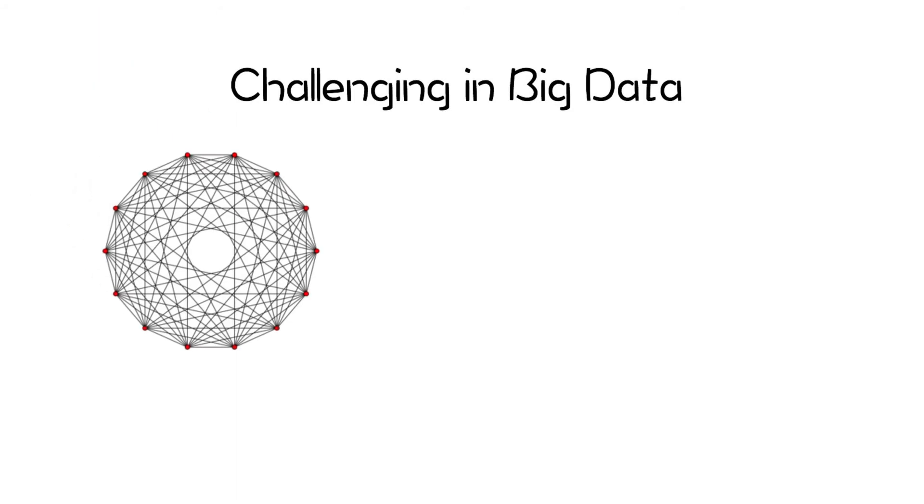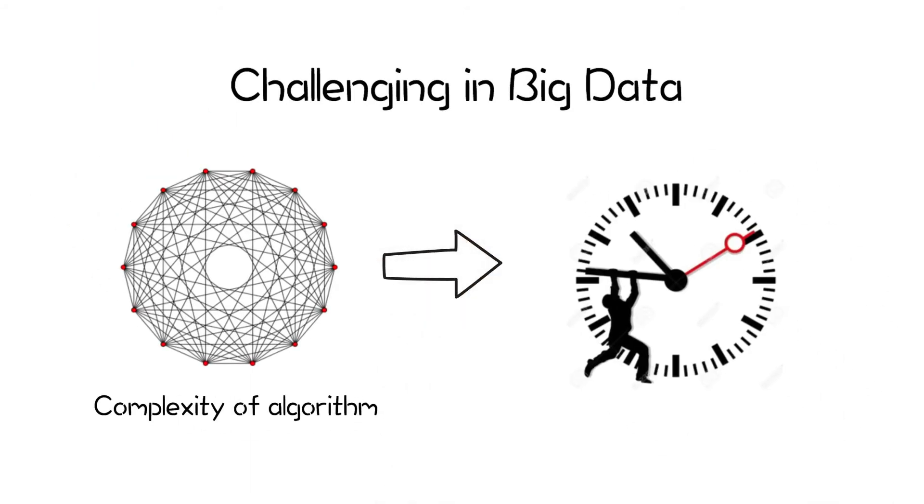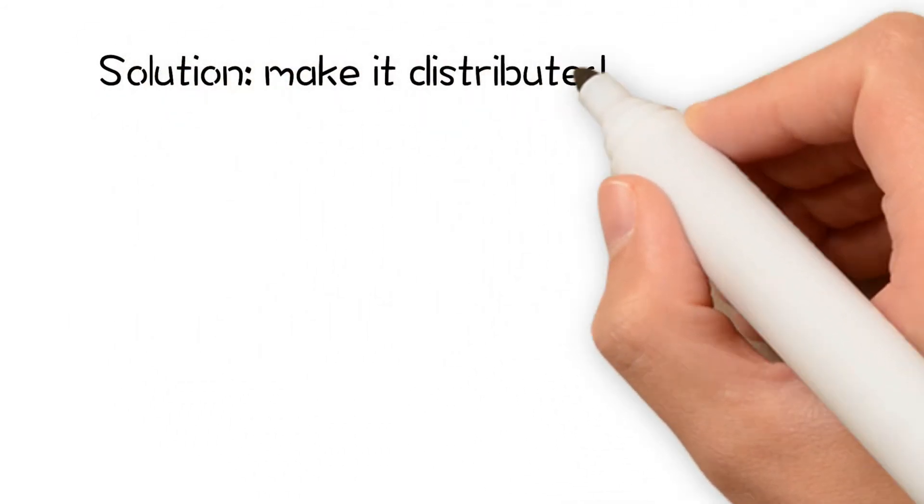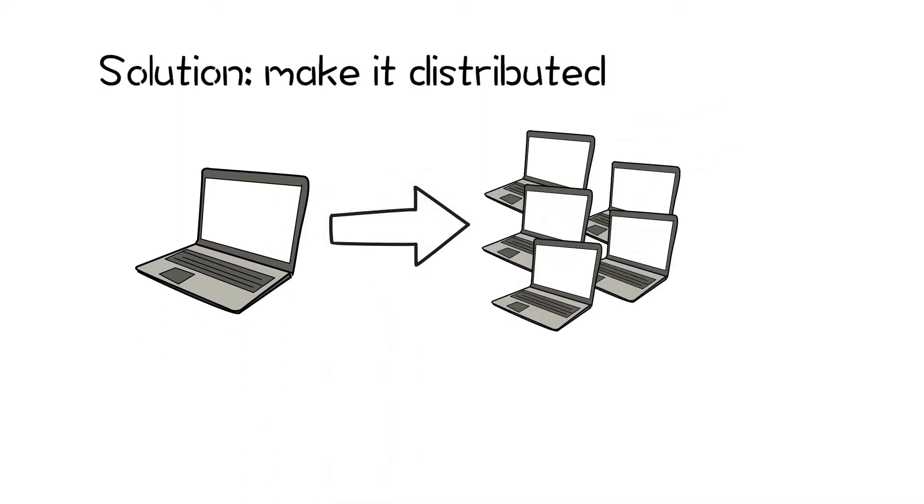LOF is challenging to run on big data. Due to the complexity of the algorithm, it may take a very long time to detect outliers in big datasets. The solution is to make LOF distributed using open source solutions such as Hadoop and Spark.